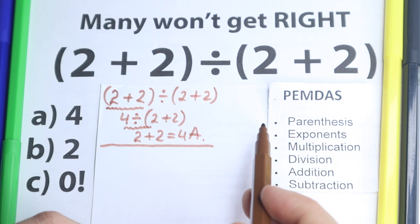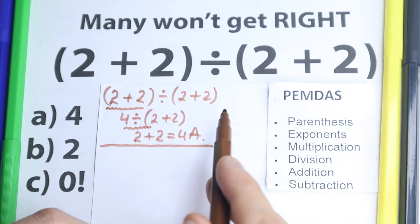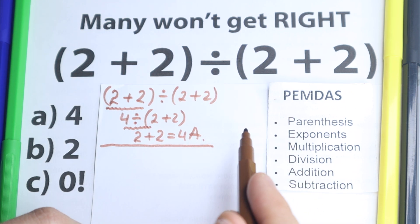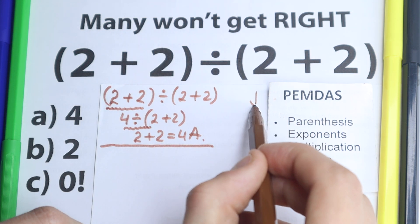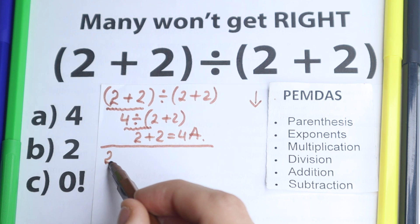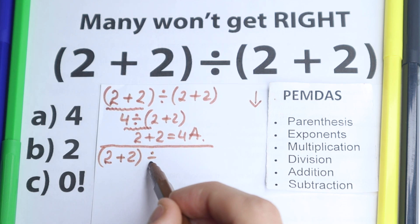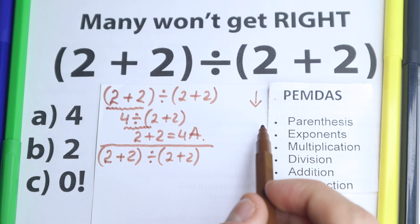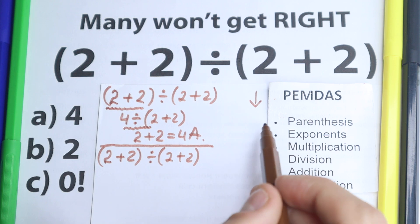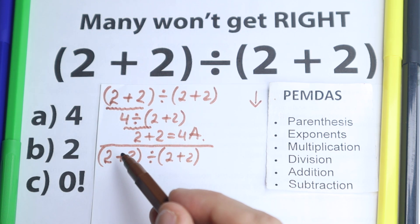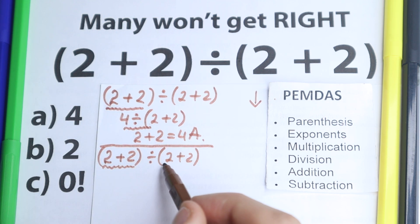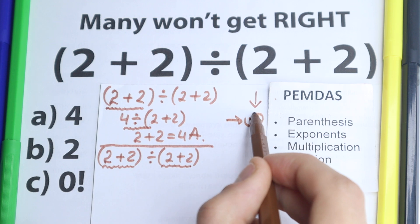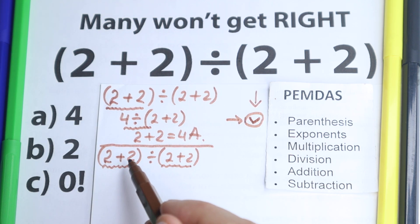PEMDAS works from top to bottom. Let me rewrite the question: 2 plus 2 in parentheses, divided by 2 plus 2 in parentheses. Looking at the PEMDAS order of operations, the first step is parentheses. Let's scan where we have parentheses in our expression — we have parentheses here and parentheses here, so two elements in the first step. We start with the parentheses, and 2 plus 2 is easy to solve.